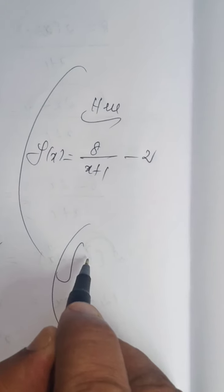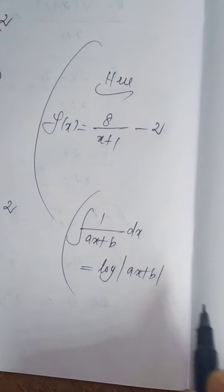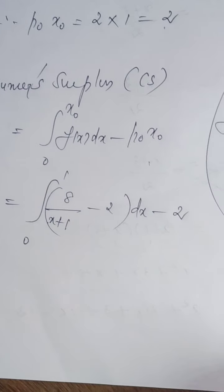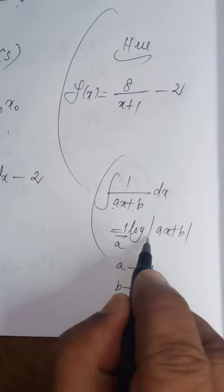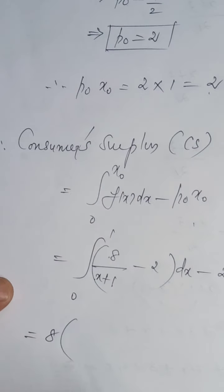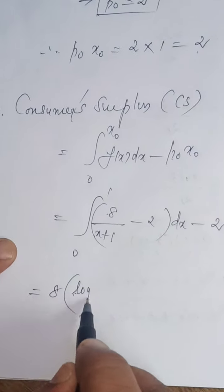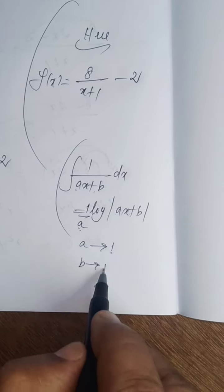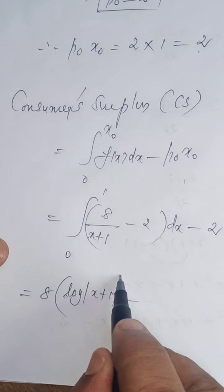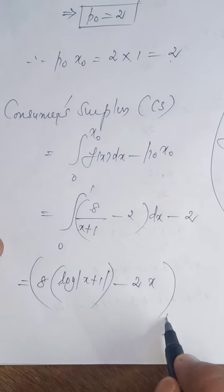We apply the formula: integral of 1/(ax plus b) dx equals (1/a) log|ax plus b|. Comparing, a is the coefficient of x, so a equals 1, and b equals 1. Substituting: 8 times (1/1) times log|x plus 1|, which simplifies to 8 log|x plus 1|. Then minus 2 times integral of dx equals minus 2x. Apply limits 0 to 1.